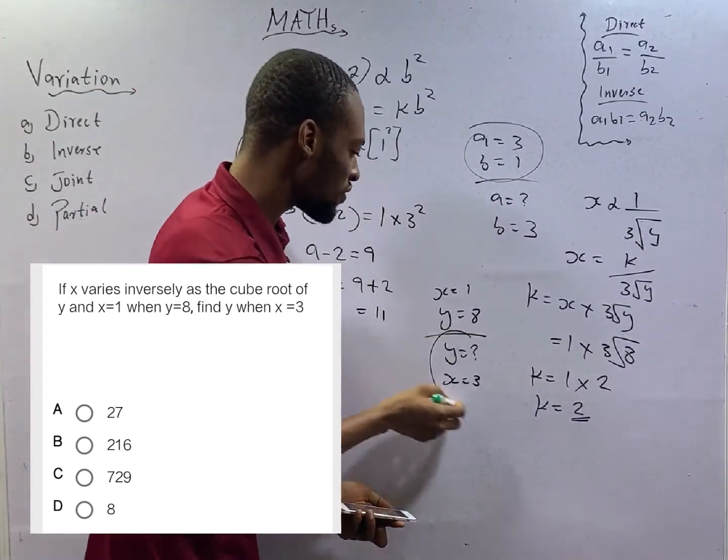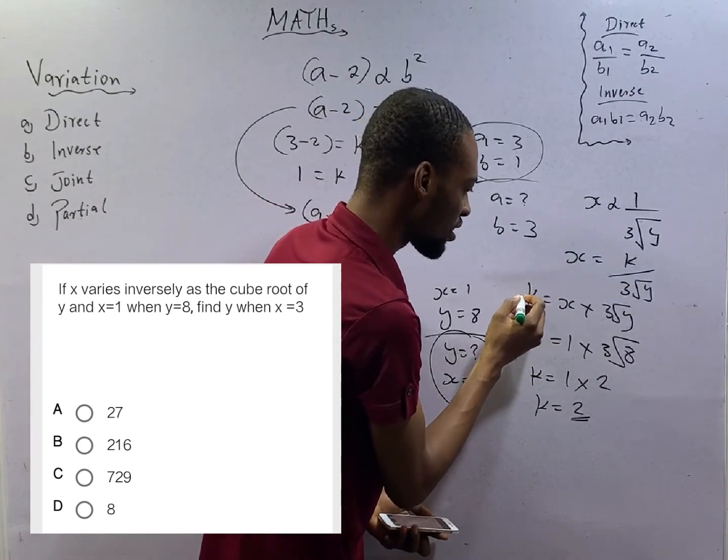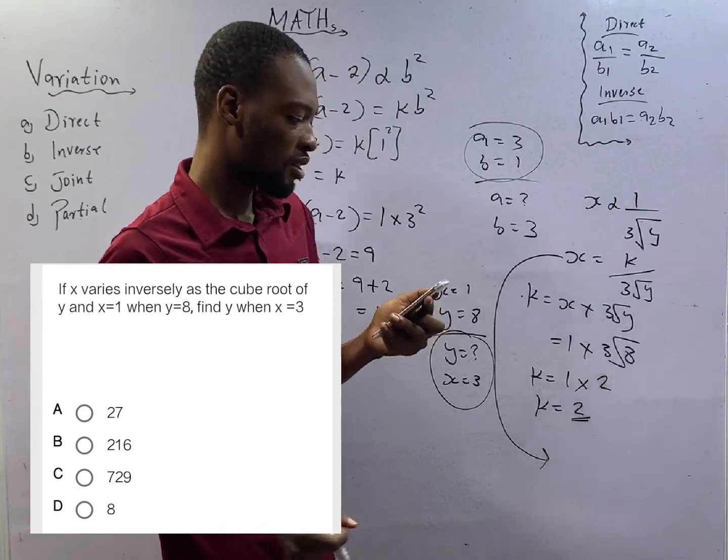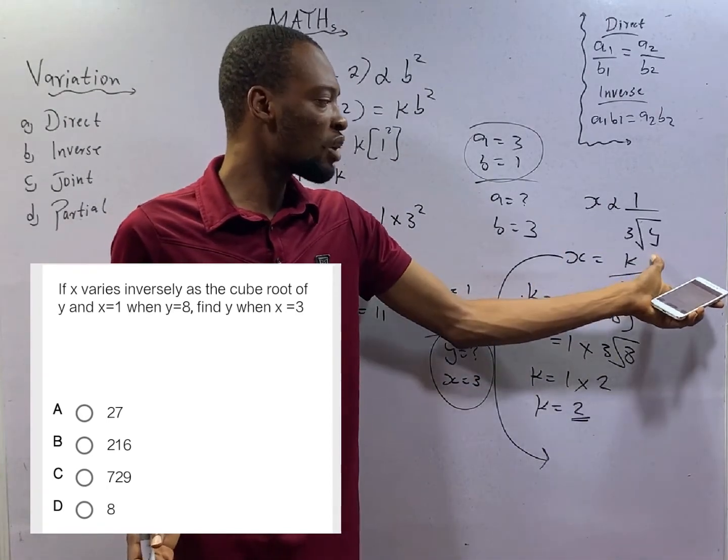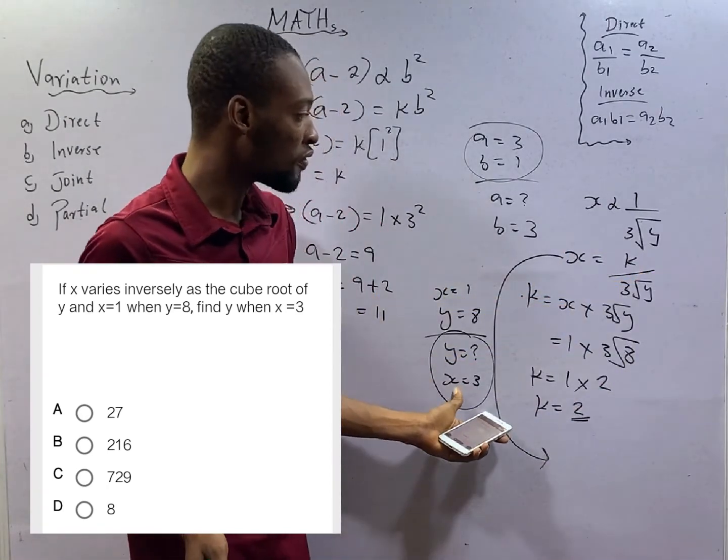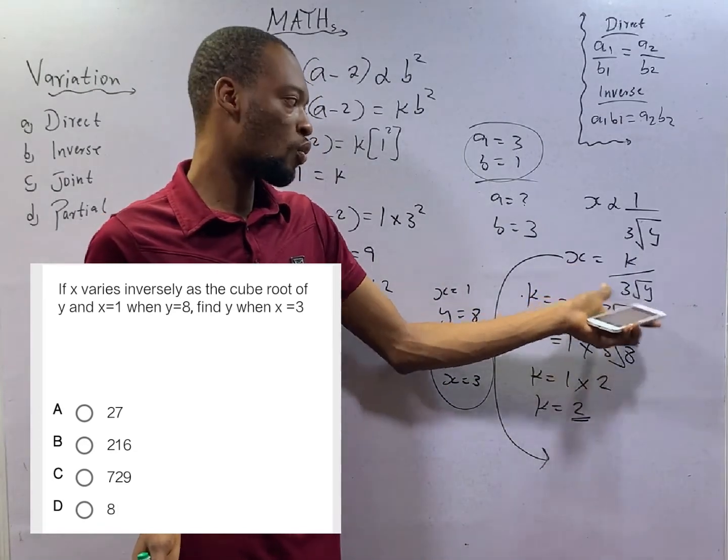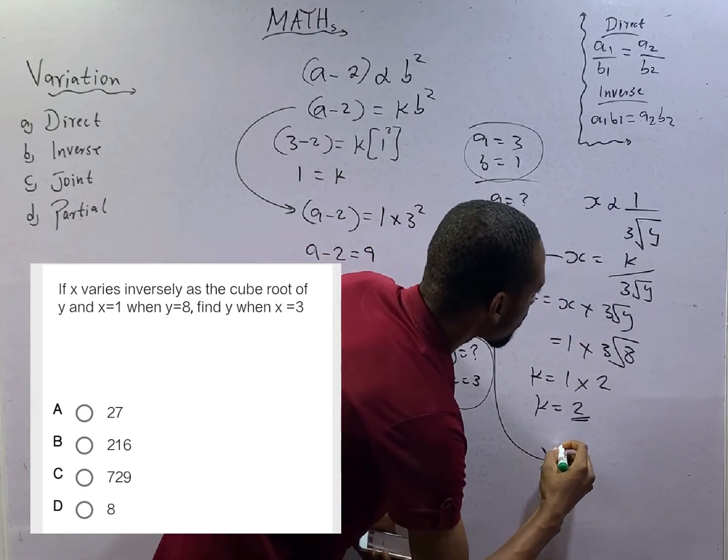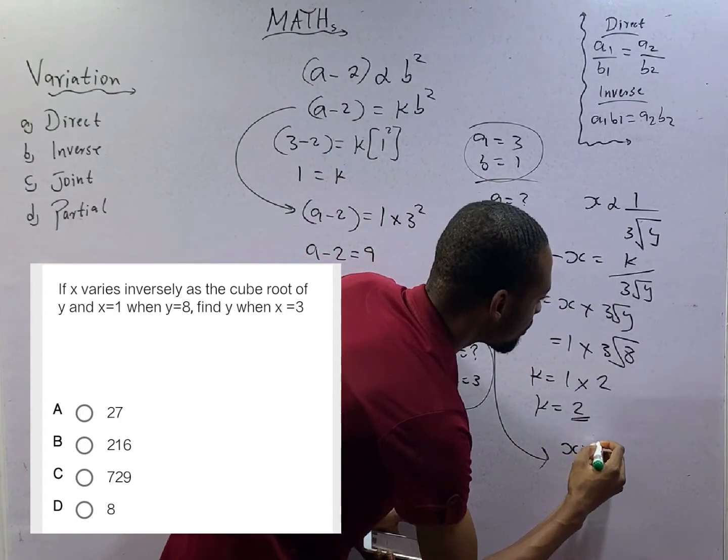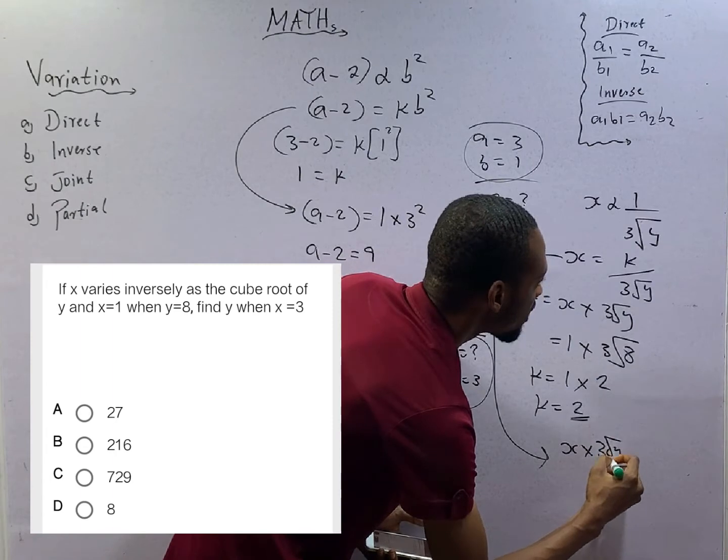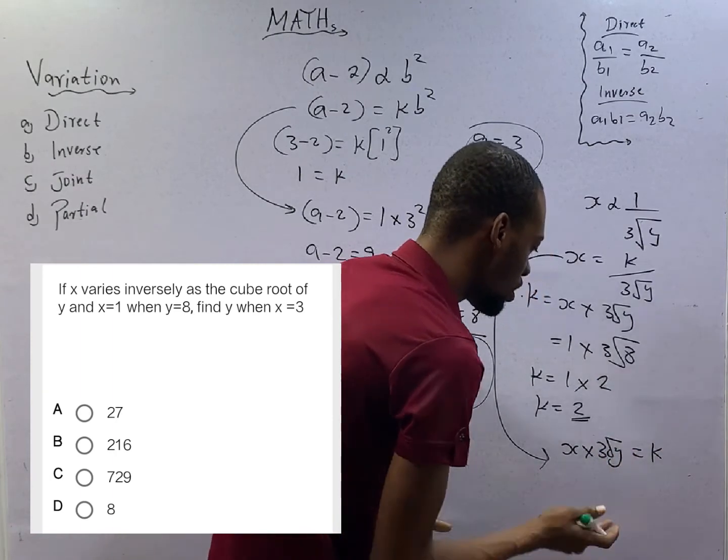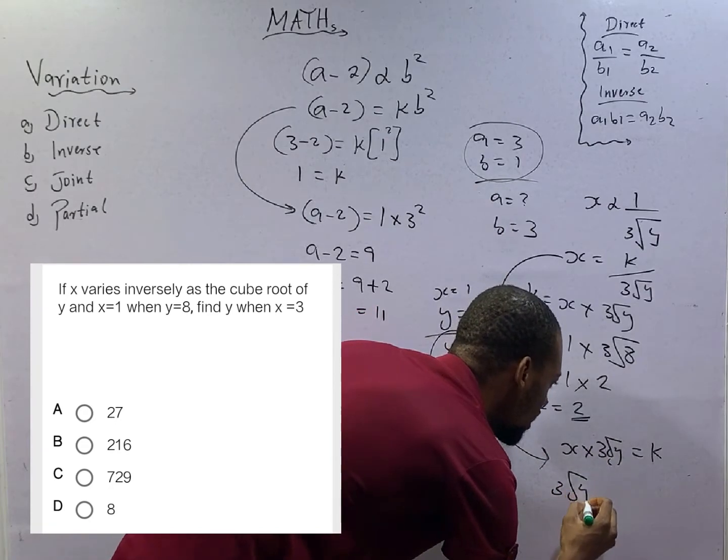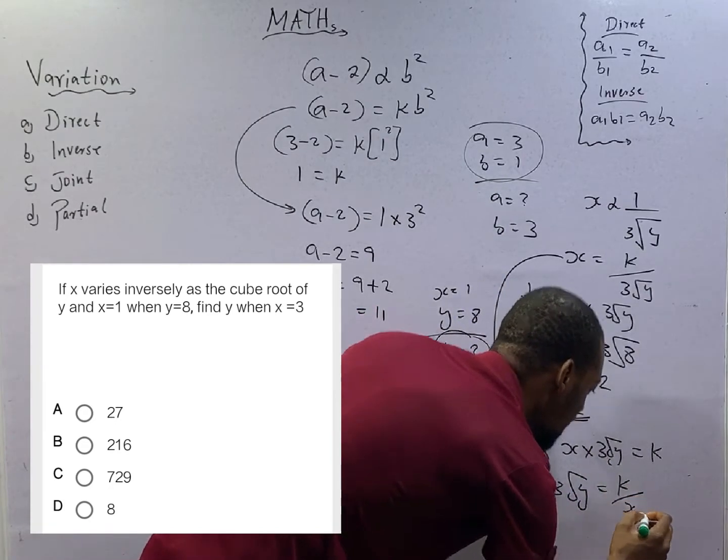So to solve the other part of the equation, we bring out here again. Then from here, we already know our constant and we know the value of x. We are looking for y. And this becomes, cross multiplying, x times cube root y equals k. Dividing both sides by x, cube root of y equals k over x.